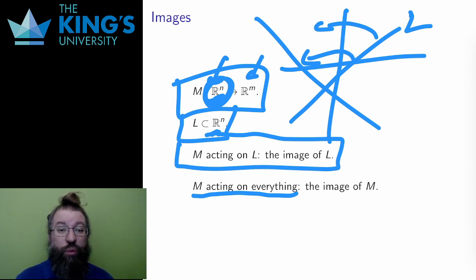For linear transformations, the word range is not used. Instead, this image of everything, this set of all outputs, is confusingly called the image of the transformation itself.